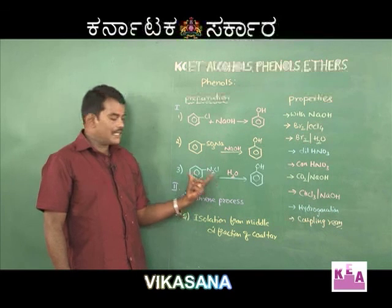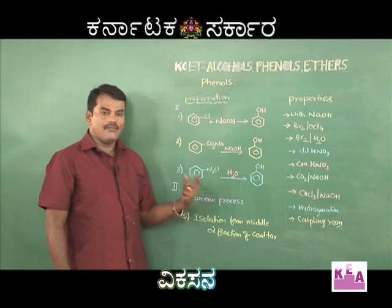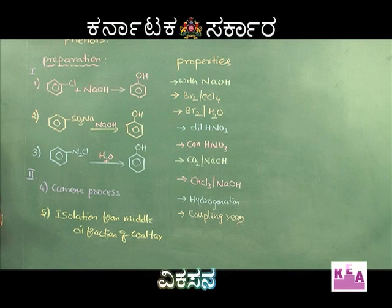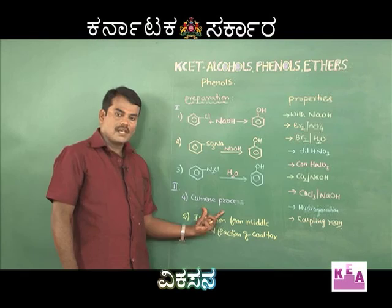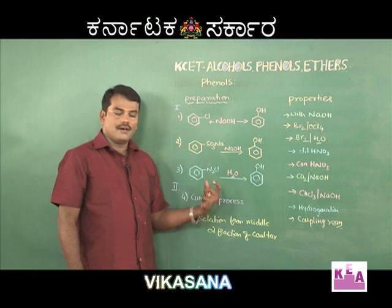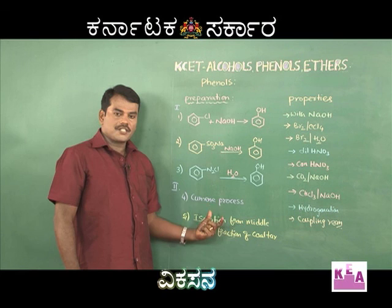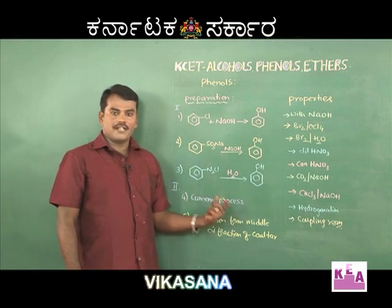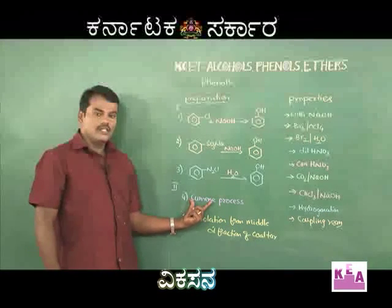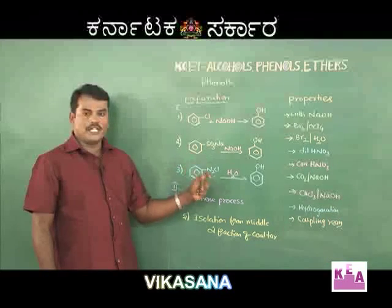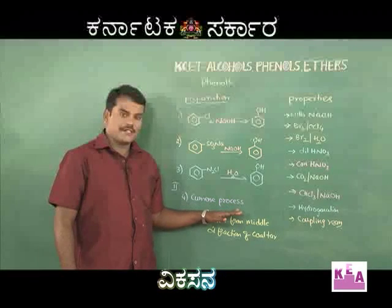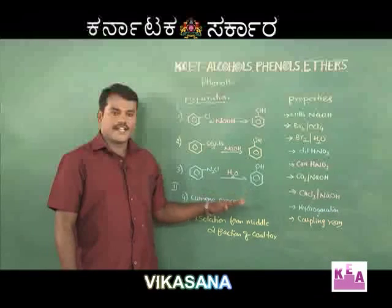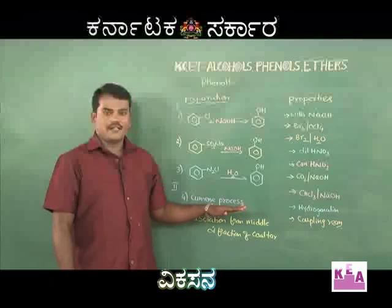After learning the preparation of phenols, let us go to the manufacture of phenol — that is, production on a large scale. The first and most important method as per your syllabus is the cumene process. Phenol is obtained by the combination of benzene and propene, giving isopropyl benzene, known as cumene. Cumene on oxidation gives cumene hydroperoxide. The cumene process is very important because it yields two valuable products: phenol and acetone.